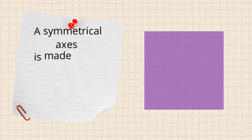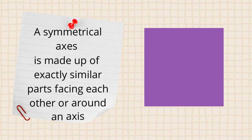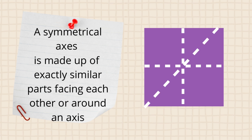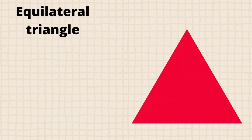Now let's see what a symmetrical axis is. A symmetrical axis is made up of exactly similar parts facing each other or around an axis. A symmetrical axis will normally form a mirror image. Look at this square — a square has four symmetrical axes.